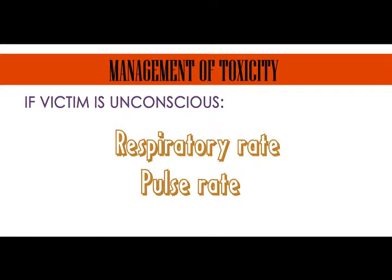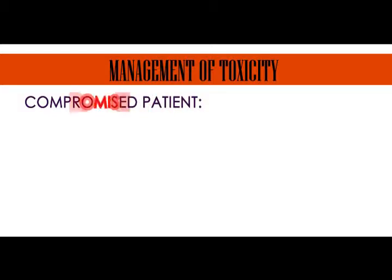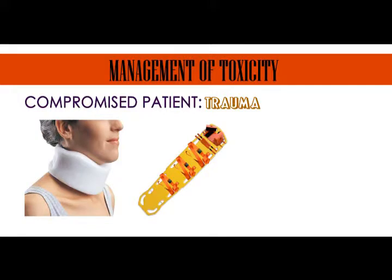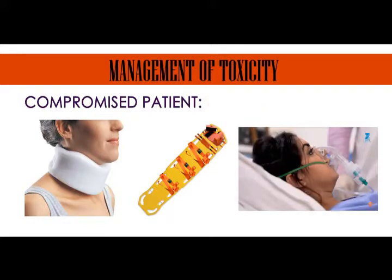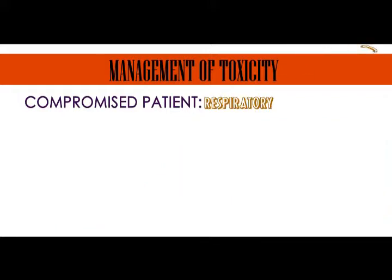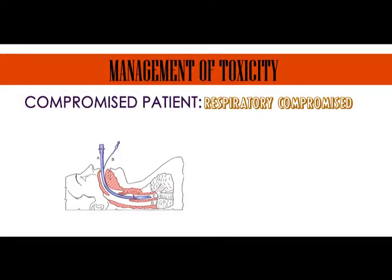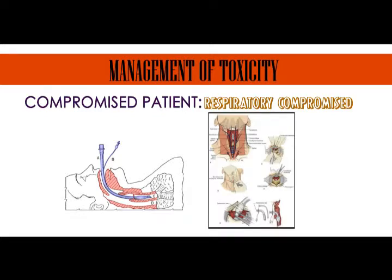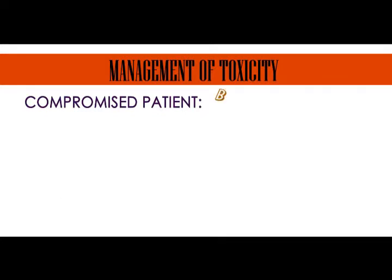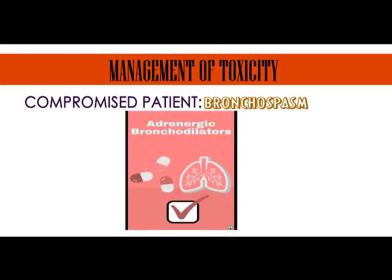The following can be done by rescuers and the medical team for a compromised patient. For trauma, stabilize the cervical spine with a collar and backboard, and administer oxygen via bag-valve mask device if necessary. If respiration is compromised, secure the airway via endotracheal tube, or perform cricothyrotomy if equipped and trained. Use bronchodilators to reverse bronchospasm.